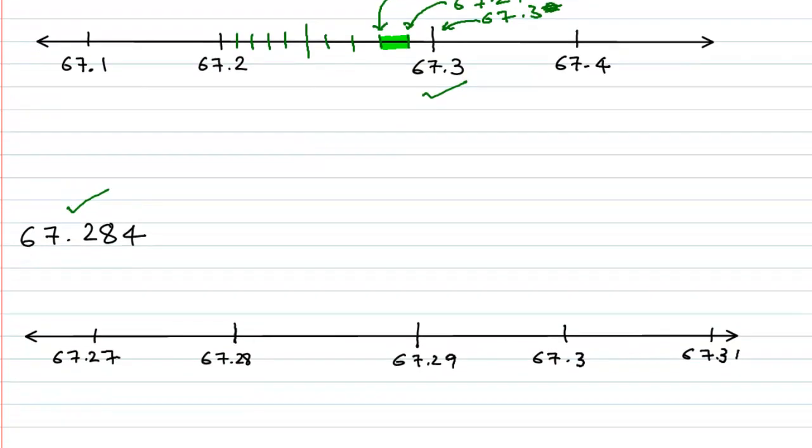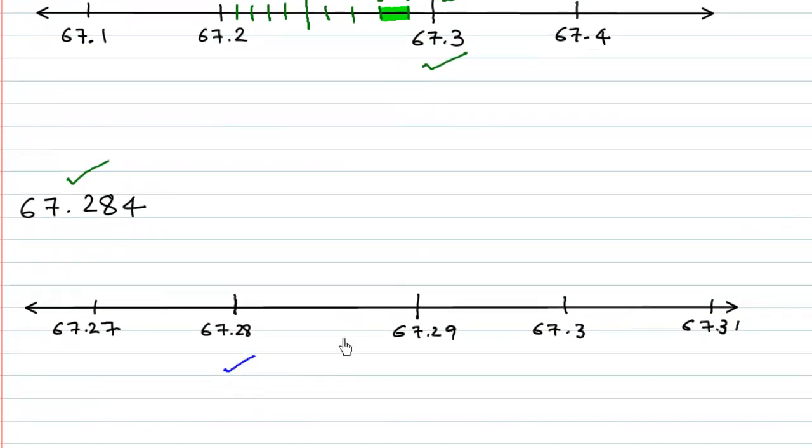So we are going to zoom inside, divide this line segment in 10 equal parts. So we are going to zoom inside 67.28 over here and 67.29. So we are going to magnify this and we are going to divide this in 10 equal parts. So this is the first, this is the second. So in fact this first is nothing but 67.281.